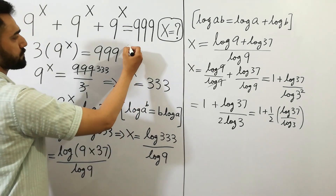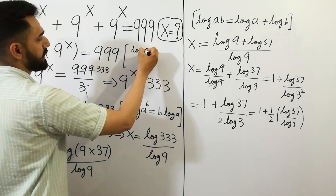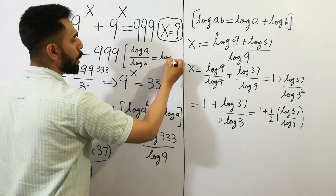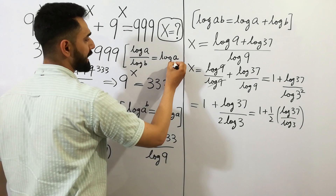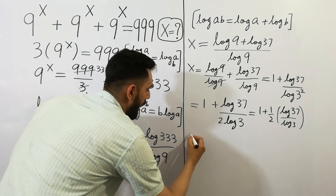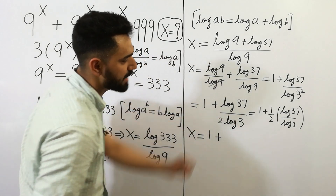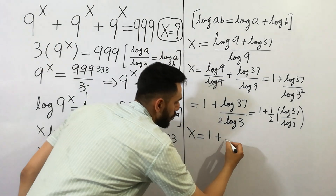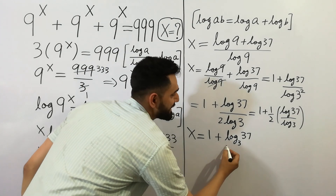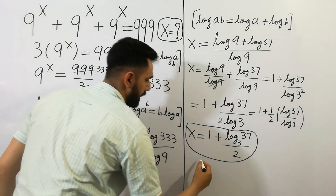Since log A divided by log B is equal to log A to the base B, we can write x is equal to 1 plus log base 3 of 37, divided by 2. So that's our final answer.